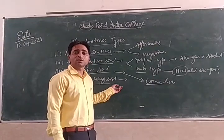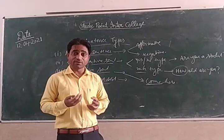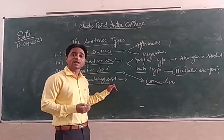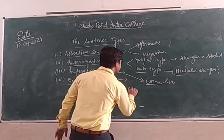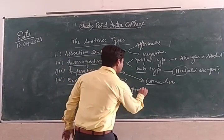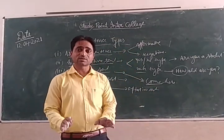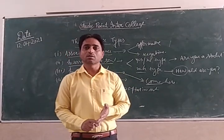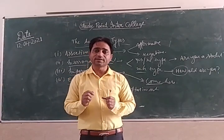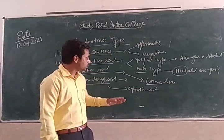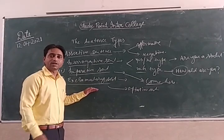The fourth one is exclamatory sentence. Exclamatory sentence means the sentence which expresses sudden feelings of the heart. There is also one more type called optative sentence, which contains any curse, wish, or blessing.